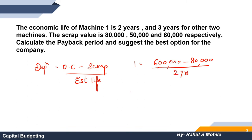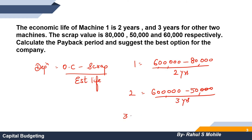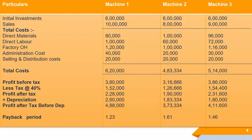For Machine 2: cost is 6 lakhs, scrap is 50,000, and life is 3 years. Similarly for Machine 3: cost is 6 lakhs, scrap is 60,000, and life is also 3 years. This is how we calculate depreciation for each machine.